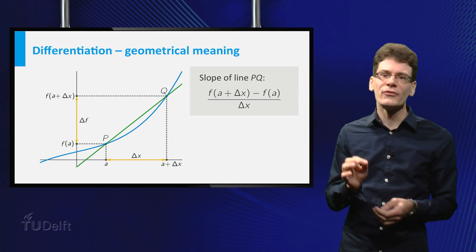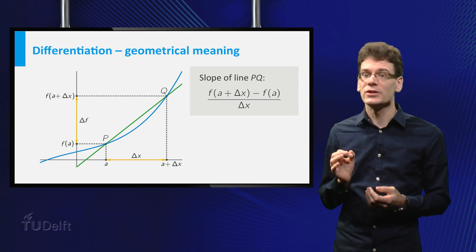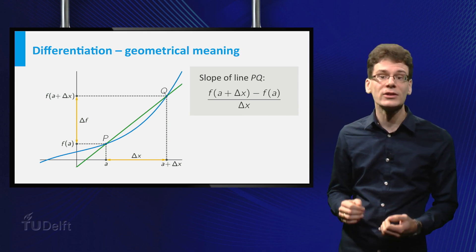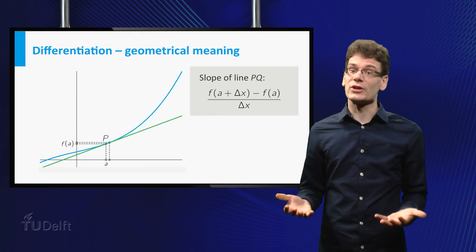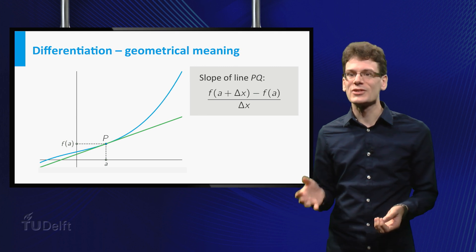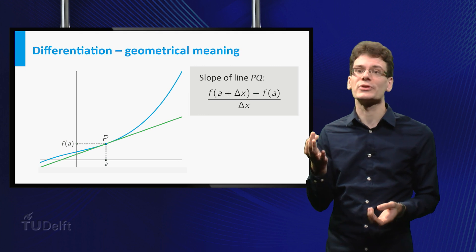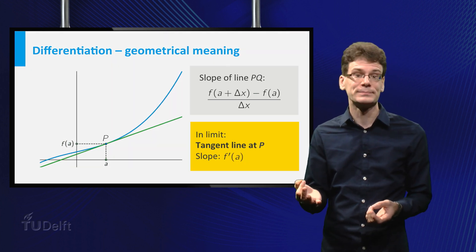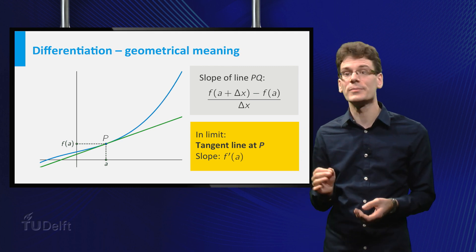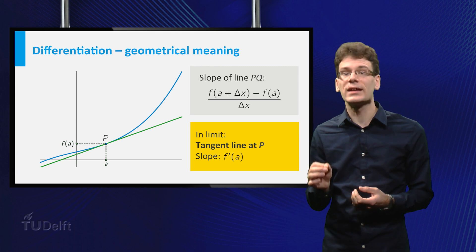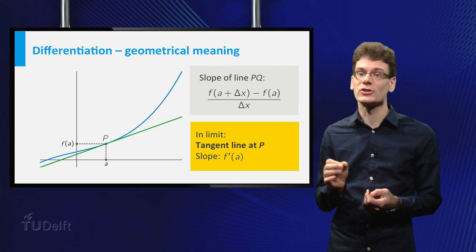If you look at the graph, both the difference quotient and the derivative have a geometric interpretation. The difference quotient is precisely the slope of the line connecting the points p and q on the graph. Now if we let delta x go to zero, you see that this connecting line approaches a limiting position. The slope of this limiting line is precisely the derivative of f at a. The limiting line itself is called the tangent line to the graph at the point p. It is the unique line with the property that it passes through the point p and has the same slope as the graph in that point.